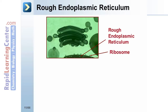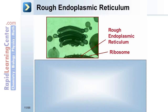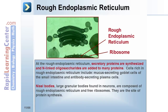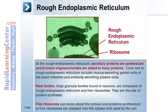Now let's move into a discussion of specific components of cells. We begin with the rough endoplasmic reticulum. At the rough ER, secretory proteins are synthesized and N-linked oligosaccharides are added to many proteins. Cells rich in rough ER include mucus-secreting goblet cells of the small intestine and antibody-secreting plasma cells. Nissl bodies, which are large granular bodies found in neurons, are composed of rough endoplasmic reticulum and free ribosomes. These are the sites of protein synthesis. Free ribosomes can move about the cytosol, and proteins synthesized at free ribosomes are released into the cytosol and used by the cell.